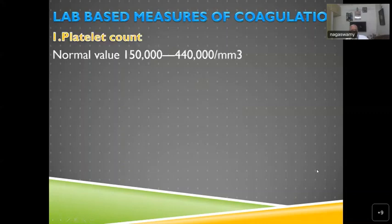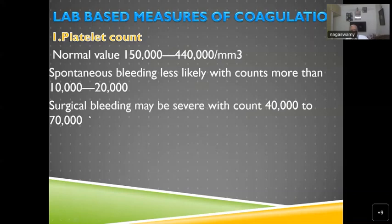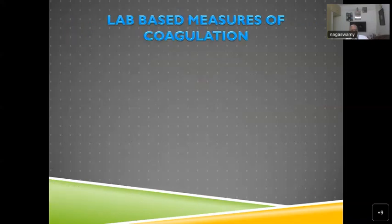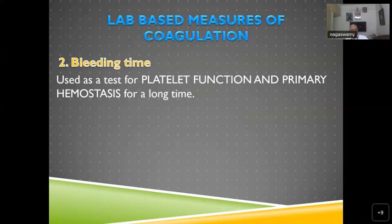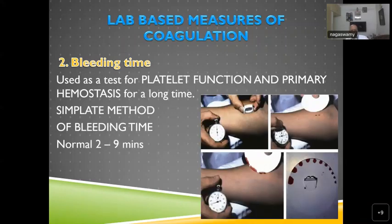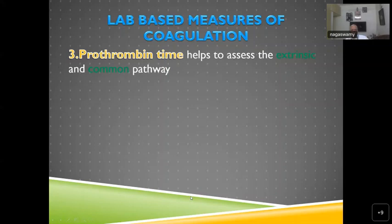Lab-based measurements: platelet count is the first test. Bleeding time tests platelet function — quantity was measured by platelet count, while bleeding time tells about quality and functional status of platelets and primary hemostasis. The method is simple: prick the hand, use a timer, apply blotting paper, and observe the decrease in bleeding. Prothrombin time (PT) helps assess the extrinsic and common pathway.